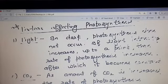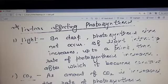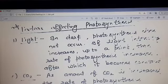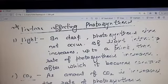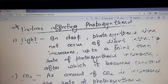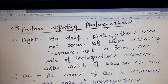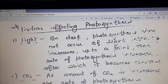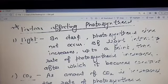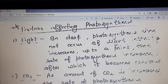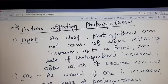First factor is light. In the dark, photosynthesis does not occur. Light is a necessary condition for photosynthesis. If light intensity increases up to a point, the rate of photosynthesis increases. Light intensity is directly proportional to photosynthesis. As the intensity of light increases, the rate of photosynthesis will also increase. After that it becomes constant.